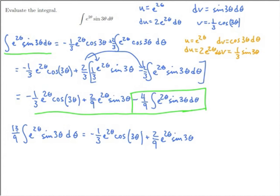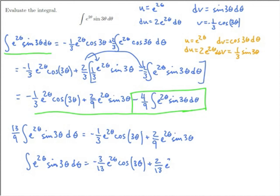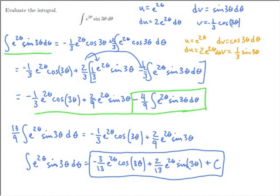To solve for this integral, I multiply both sides by 9 thirteenths. So the integral of e to the 2 theta sine of 3 theta d theta equals negative 3 thirteenths e to the 2 theta cosine of 3 theta, plus 2 thirteenths e to the 2 theta sine of 3 theta, plus a constant. Remember, we're finding an antiderivative, so that is the indefinite integral. We were able to do this by using integration by parts twice, which brought back exactly the same integral we started with — then we combined those terms and solved for the integral.